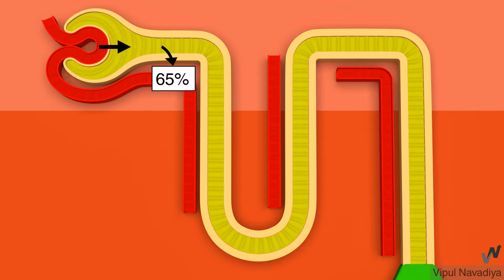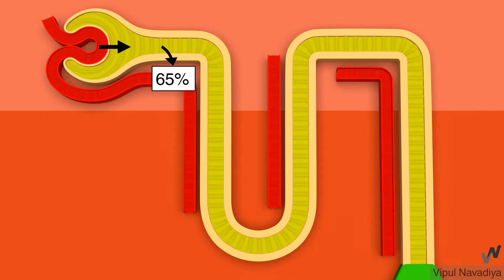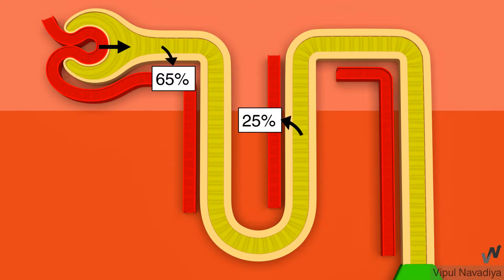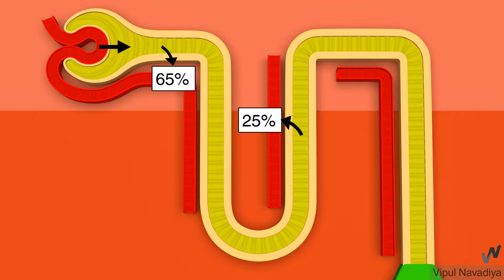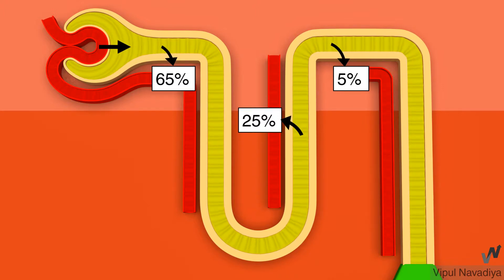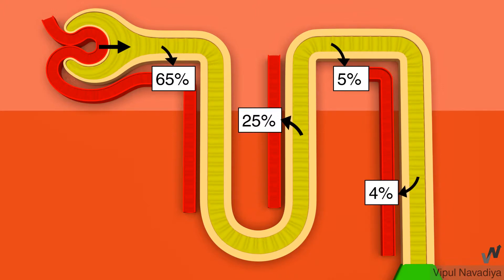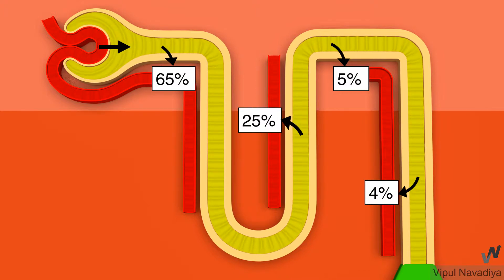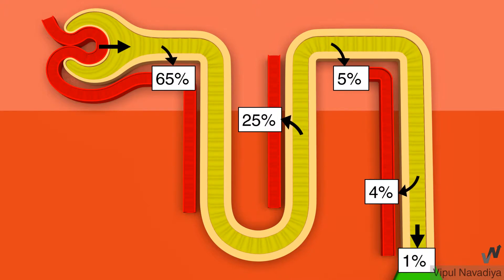About 65% of chloride is reabsorbed in the proximal tubule, 25% from the ascending limb, 5% from the distal tubule, and 4% from the collecting duct. About 1% is excreted in urine.